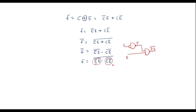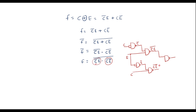Similarly, implement E bar using a NAND gate with both inputs shorted to E — output is E bar. Then use another NAND gate with inputs E bar and C — output is (C E bar) complement. Finally, use one more NAND gate where the outputs of the previous two NAND gates are connected as inputs, giving the final output F. So we have implemented the function using five NAND gates.